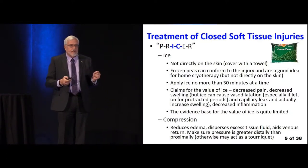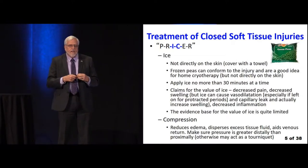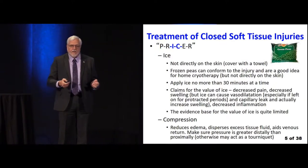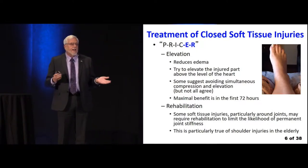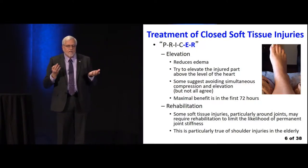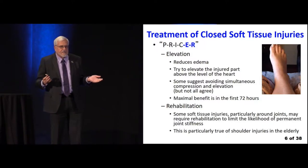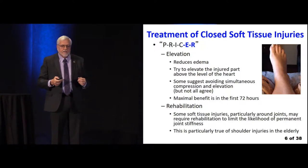Compression. We know that compression reduces edema — it disperses the excess tissue and fluids and aids in venous return. Just make sure that the pressure is greater distally than proximally, so that we don't inadvertently end up with a tourniquet. Elevation also reduces edema. We try to elevate the injured part above the level of the heart. There's some discussion about whether you ought to do compression and elevation at the same time — not everybody agrees, but do what's right for your patient.